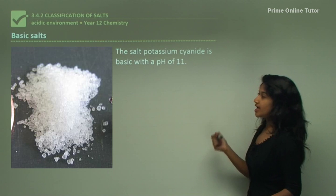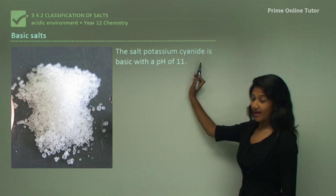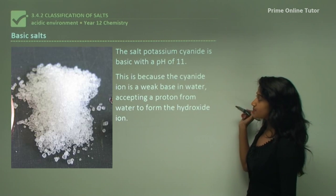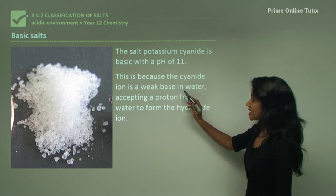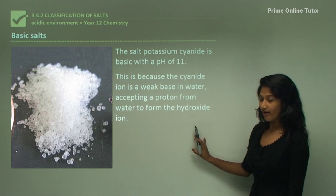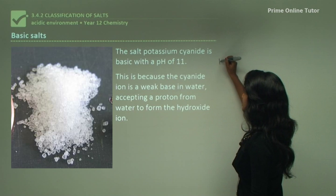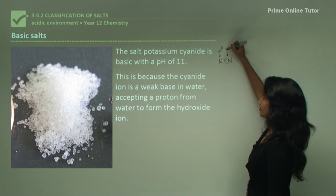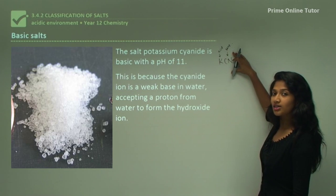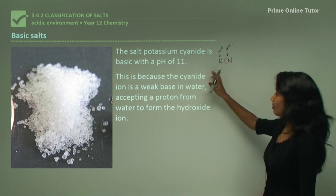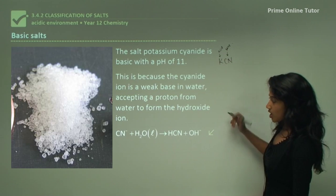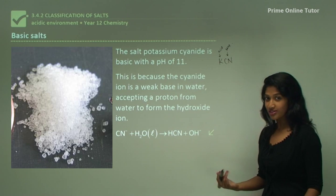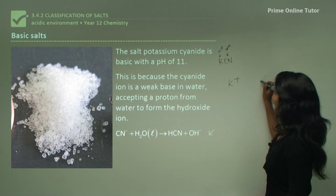Let's first take a look at basic salts. A basic salt, for example potassium cyanide (KCN), has a pH greater than 7 — in this case a pH of 11. This is because the cyanide ion is a weak base in water. When potassium cyanide dissociates in aqueous solution, it forms a potassium ion and a cyanide anion.